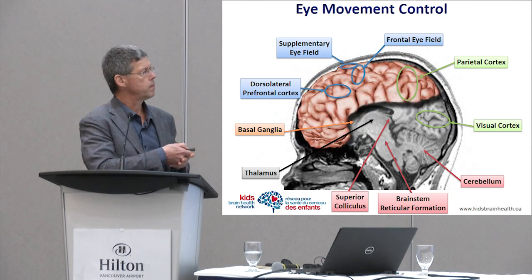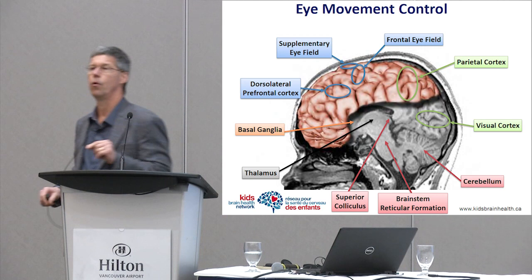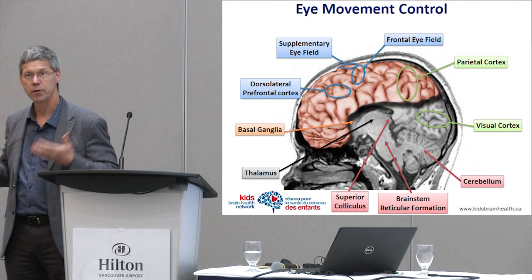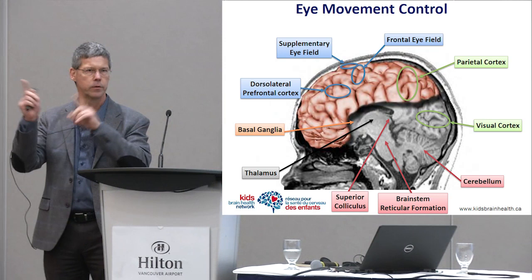My particular area of research, which I've spent most of my time on over the last 10 to 12 years, has been investigating the way eye movement control — the way we look at things — can provide very rich information about the brain. What's shown in this schematic are all of the structures in the brain, and every one of these plays an important role in determining what you look at. Essentially, almost your entire brain has some role to play in where your eyes go in your visual world.